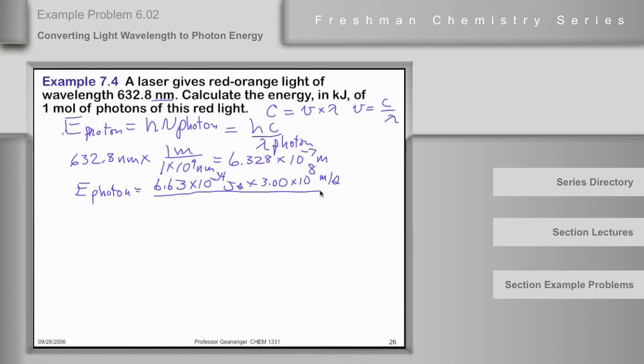E of the photon divided by 6.328 times 10 to the negative 7th meters. And E of the photon, I got 1.89 times 10 to the minus 19th joules per photon.